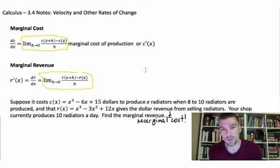What we want to do is find the marginal cost. I forgot to add that into your notes. So we're going to find marginal cost and marginal revenue as a radiator shop owner, and we crank out about 10 radiators a day. What we've discovered through running our shop is that the cost to produce 8 to 10 radiators is x³ - 6x + 15. And the revenue from that is going to be x³ - 3x² + 12x. Once we sell the radiators, that's how we know that we've made some money.